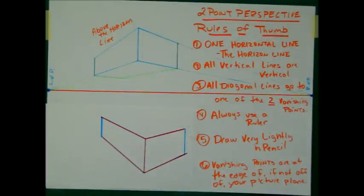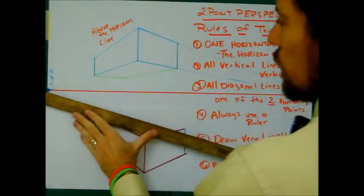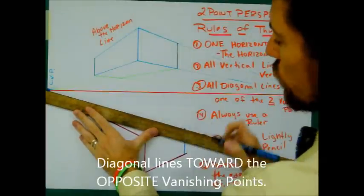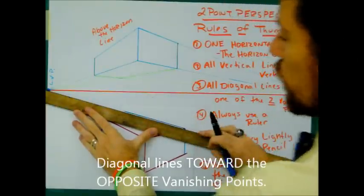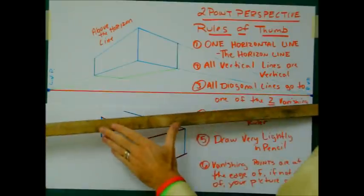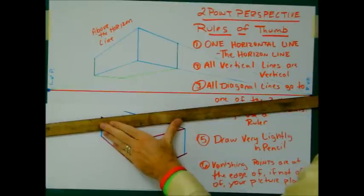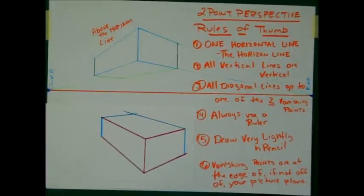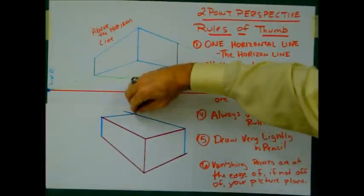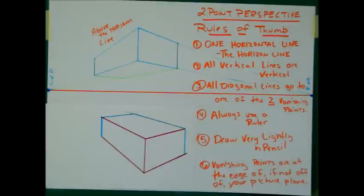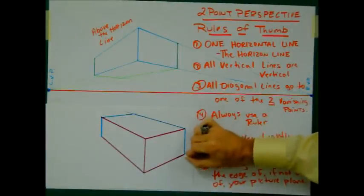What I need to do now is create a top to this cube. Using my ruler — rule number four, always use your ruler — from the back right corner to its opposite vanishing point, I'm going to draw to my left vanishing point. Then from the back left upper corner to my right vanishing point. And where those lines intersect, that's the back edge of my cube. Because you're drawing very lightly in pencil, you can go ahead and erase those little bits of diagonal line that don't need to be there. And there you've got a cube beneath your horizon line.